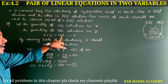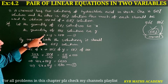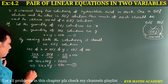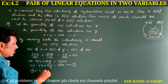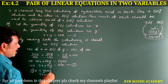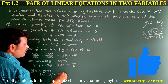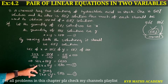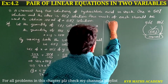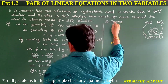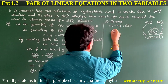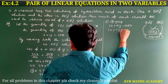For cancellation, multiply equation number 1 by 5. That gives 5X plus 5Y is equal to 500. Let this be equation number 3. Now, subtracting equation 3 from equation 2: 5X plus 8Y equals 680, minus 5X plus 5Y equals 500.